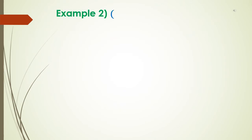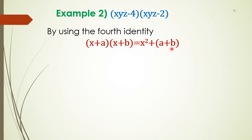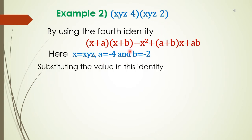The next example is (xyz - 4) into (xyz - 2). We will use the fourth identity: (x + a) into (x + b) = x² + (a + b)x + ab. Here x is equal to xyz, a is equal to minus 4, and b is equal to minus 2.